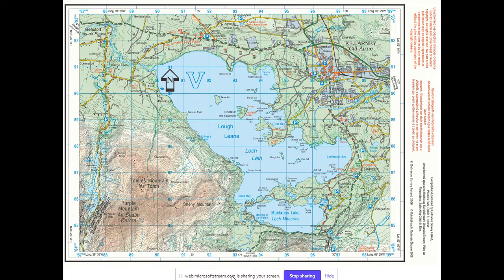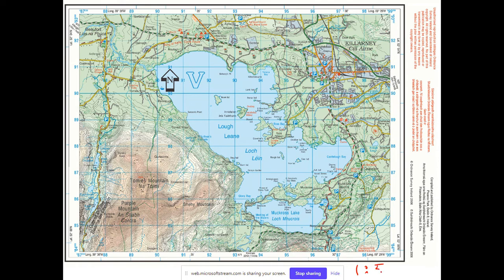Just a quick little video here on what you might have missed out in class during the week. There were a number of you out. What we're going to look at is how to get a location on one of these Discovery Series maps. These were the maps we were looking at in class. The scale on these maps was 1 to 50,000. The ones of the world were 1 to 150 million or something like that, so this will only work on these maps.